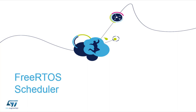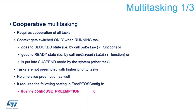Let me continue with a closer description of the scheduler and the two modes of operation. The first one is cooperative multitasking, which is a little bit special in that it requires cooperation between all tasks. Each task has to give up control to allow other tasks to run. This requires that the task gets blocked by calling a function that waits for something — a timeout or some other object — or it can reach a ready state by calling OS thread yield.